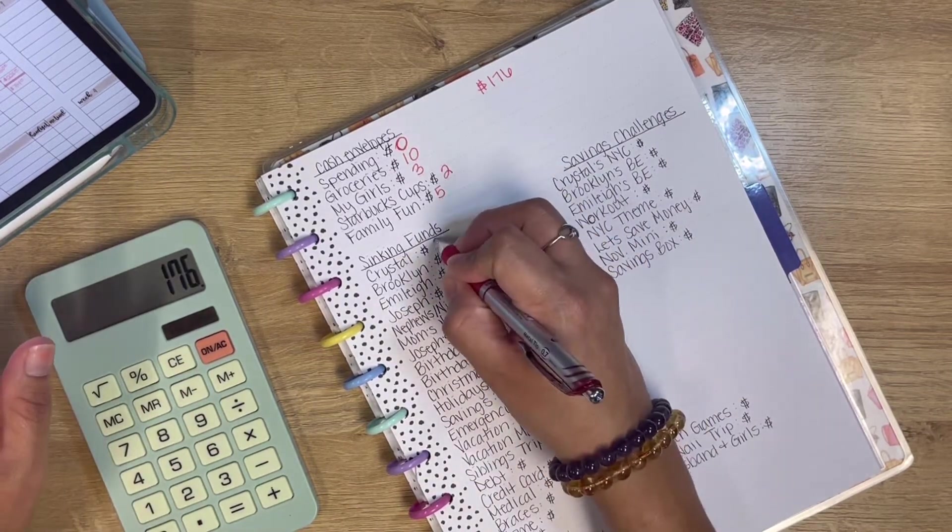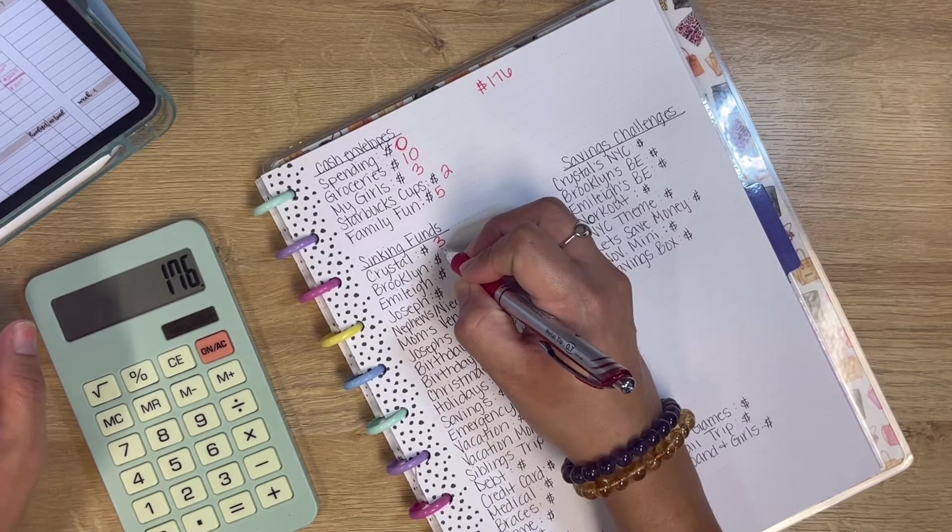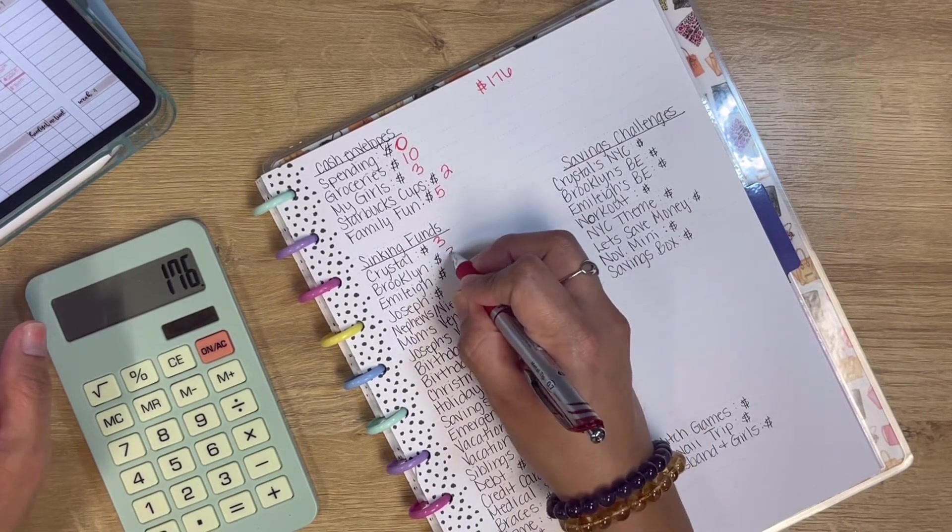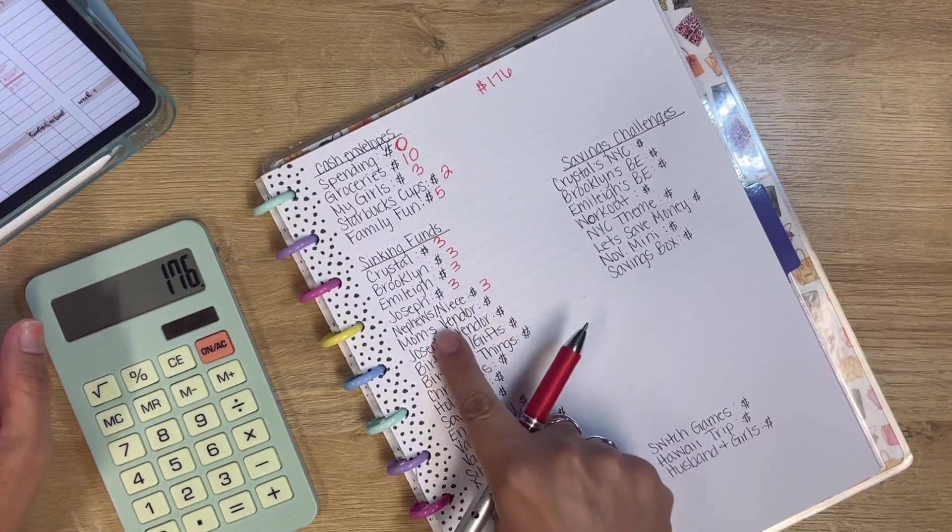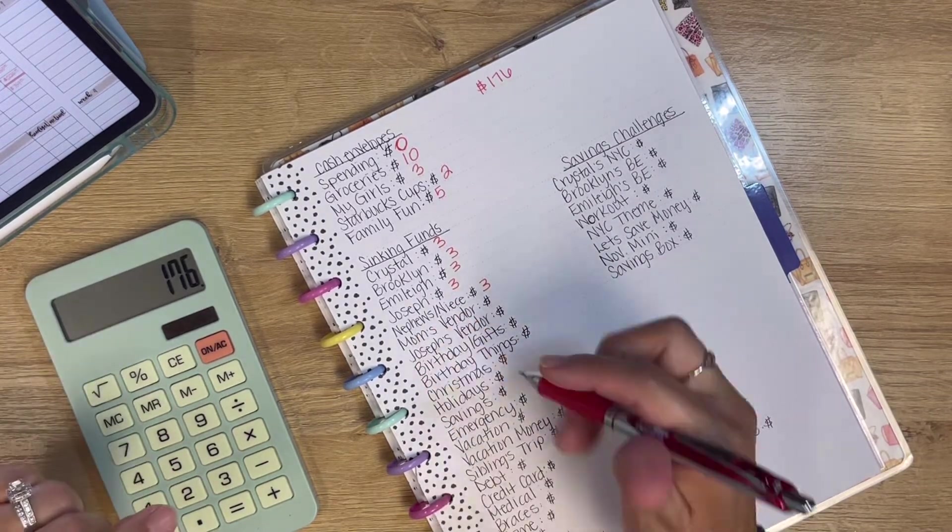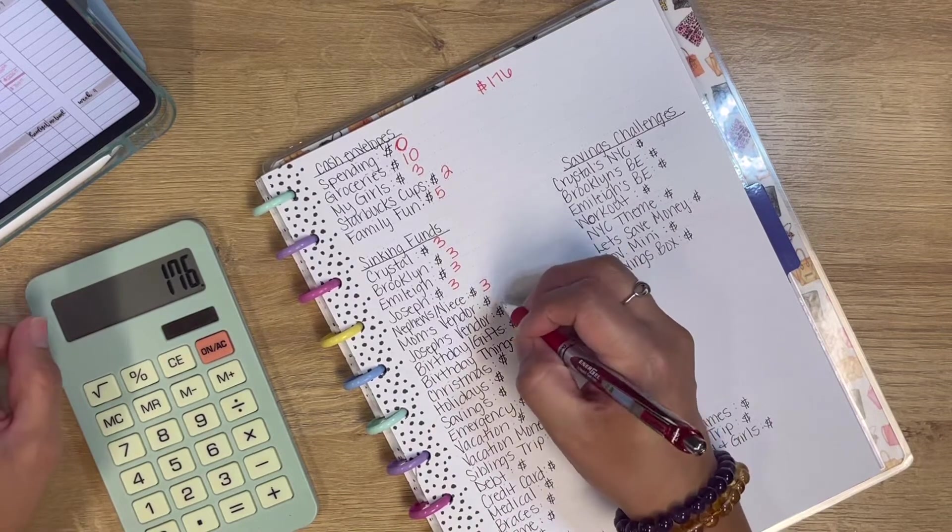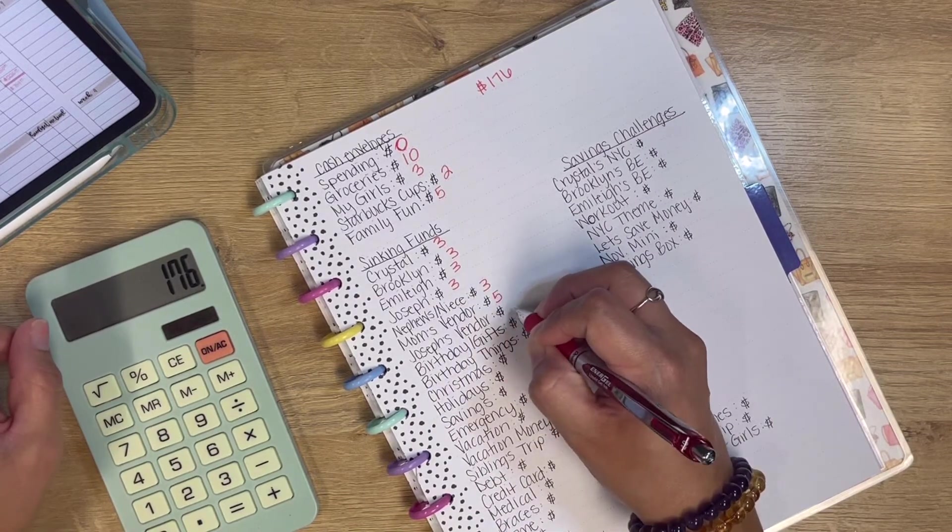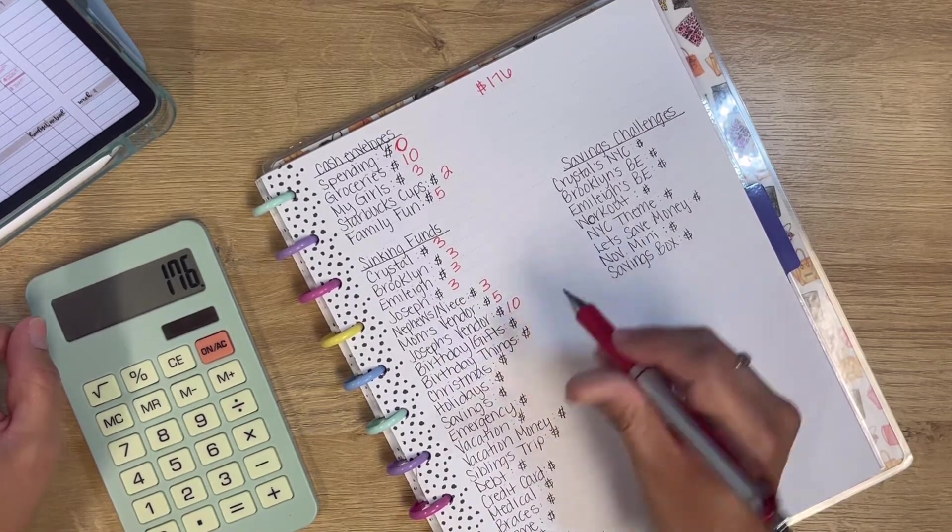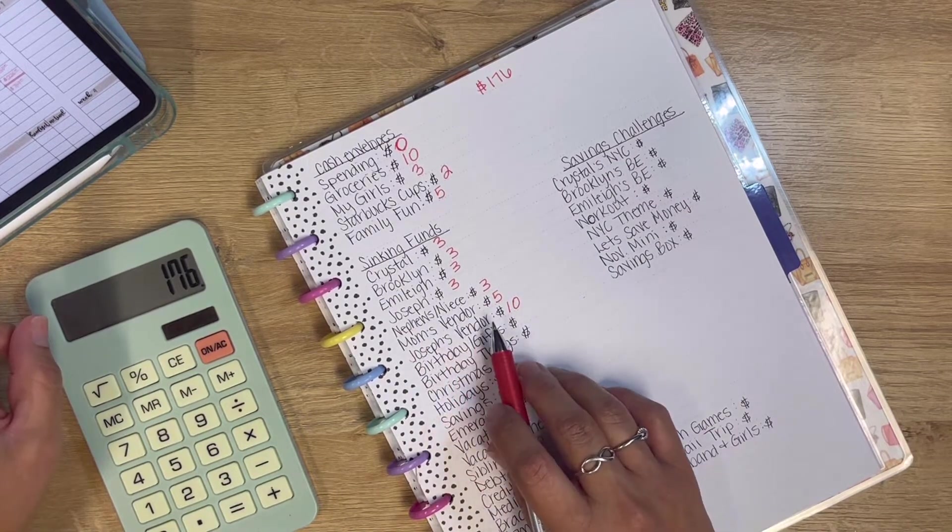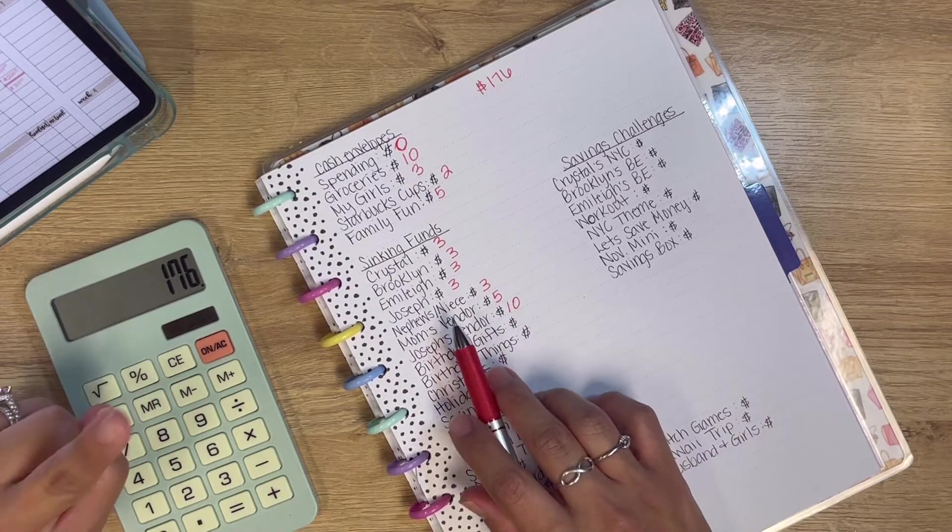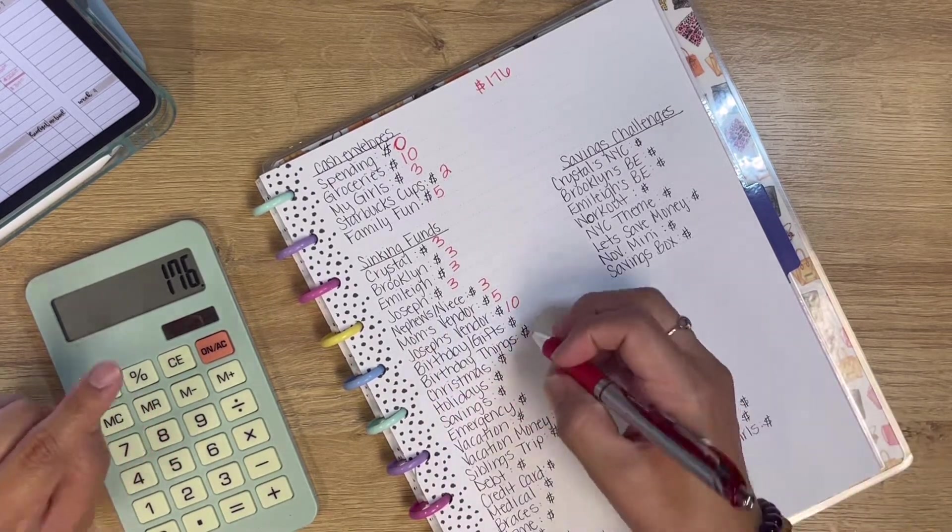For my sinking fund, I'm going to be adding $3 all the way down to my nieces and nephews or my nephews and niece. I only have one niece. My mom vendor envelope, she's going to be getting $5 and my husband $10. My mom did help me one of the markets, I believe Saturday. Saturday she came and helped and then my husband helps all the time.